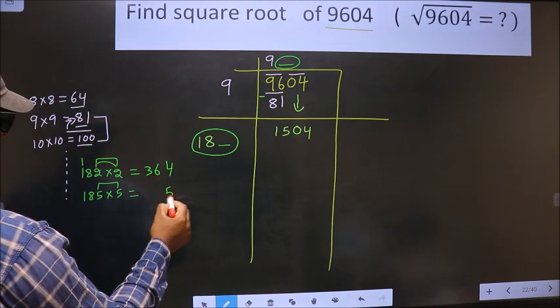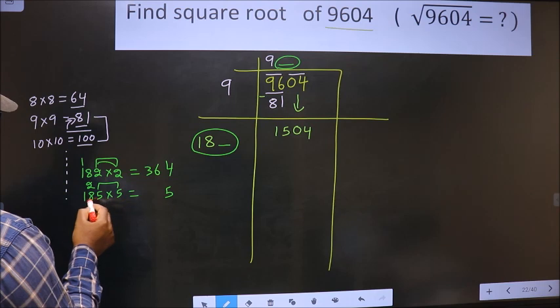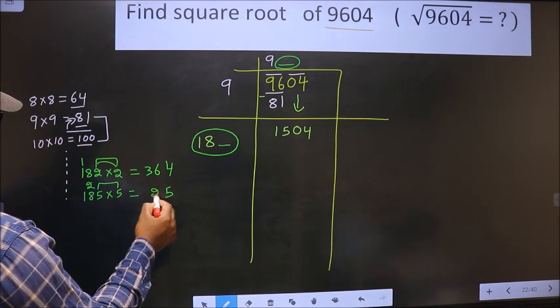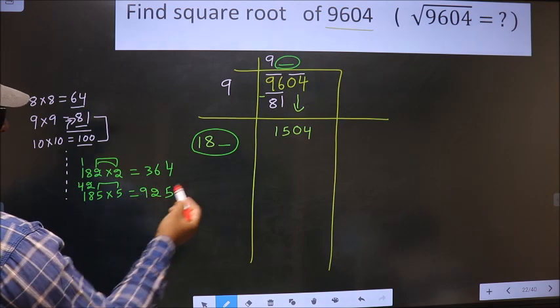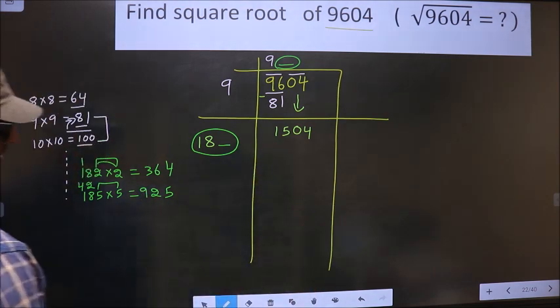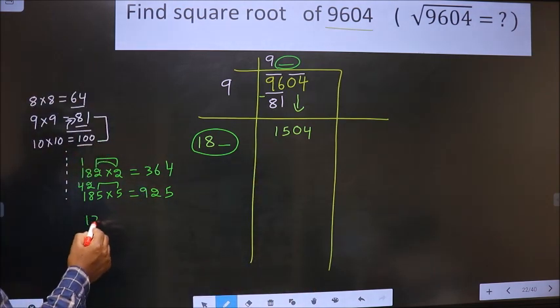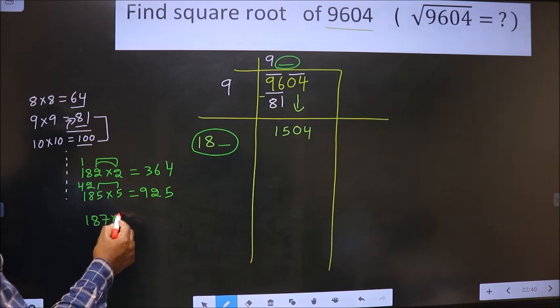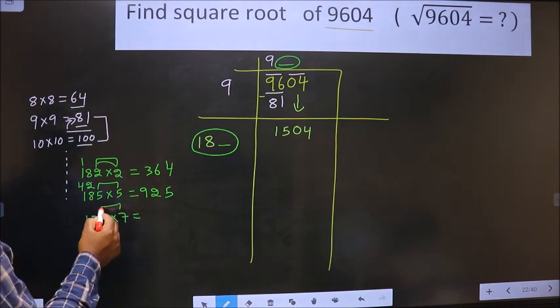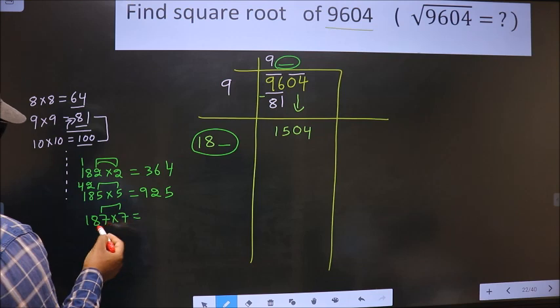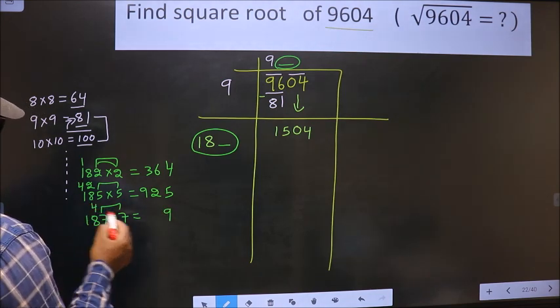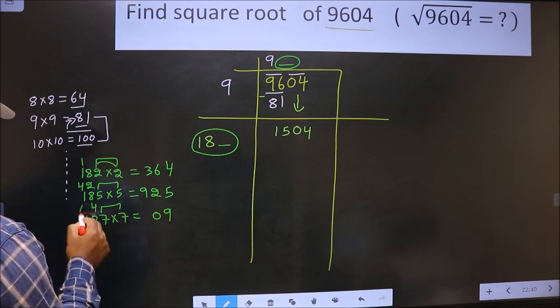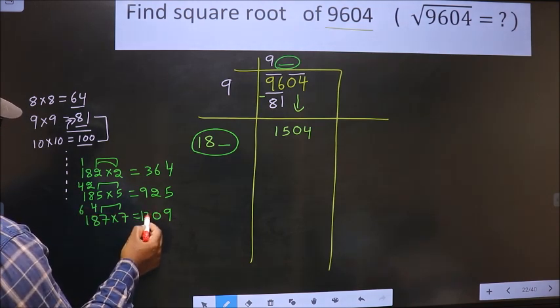5 into 5 = 25, 5 times 8 = 40, plus 2 is 42, 5 once 5, plus 4 is 9 = 925. That's also far. So if I take 7: 7 into 7 = 49, 7 times 8 = 56, plus 4 is 60, 7 once 7, plus 6 is 13 = 1379.